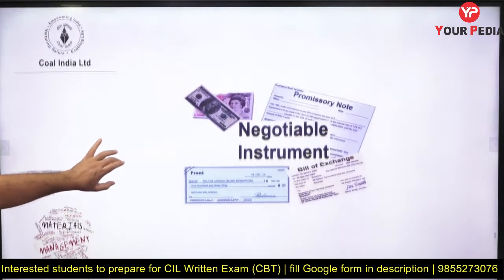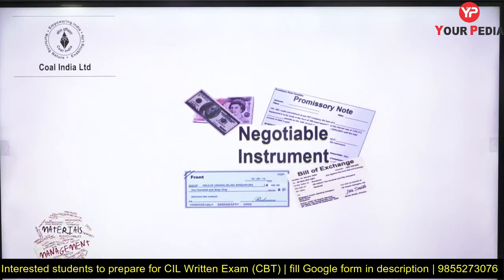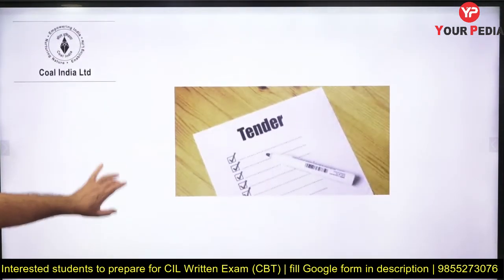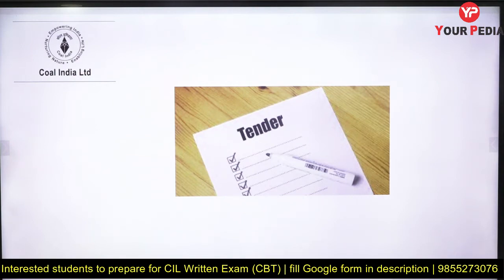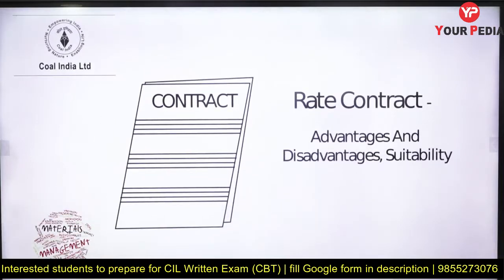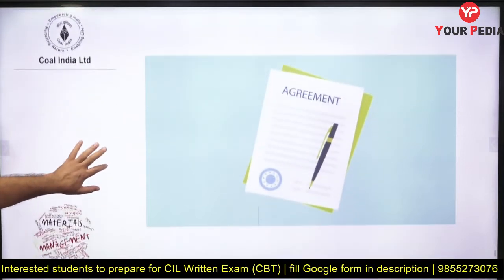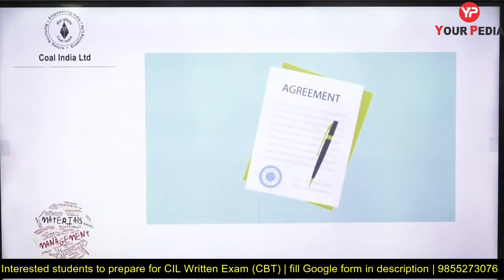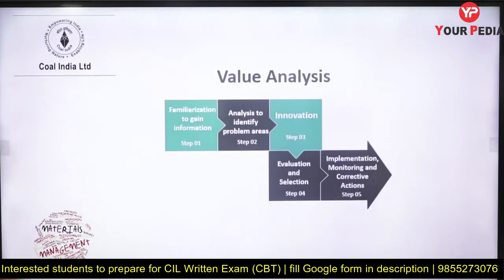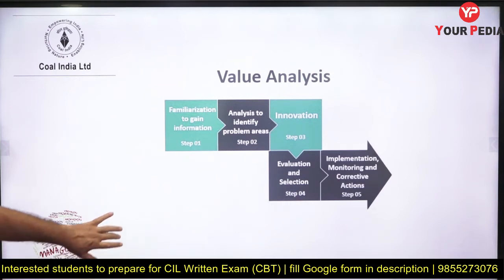The architecture of a data warehouse is an important term — warehouses can be data warehouses or product warehouses, and their architecture matters. Negotiable instruments — what they are — is a very important topic. Tenders — what they are, how many types of tenders exist — simple questions from tenders have been asked. Contract rate — what a contract is — questions have also appeared from contracts, agreements, and tenders. These are important topics to revise.